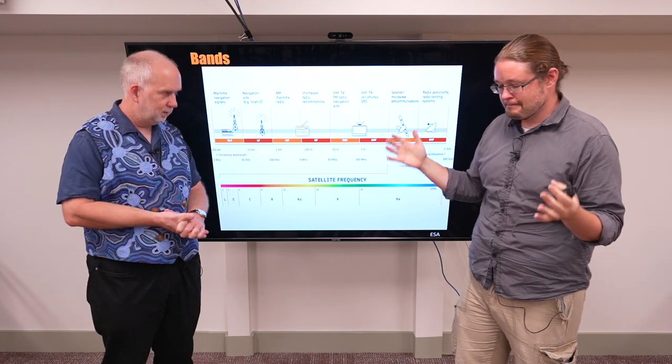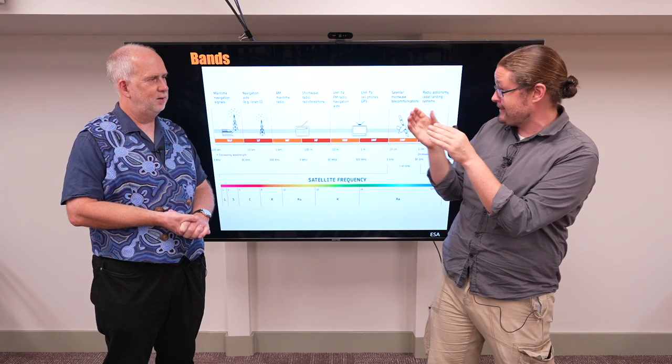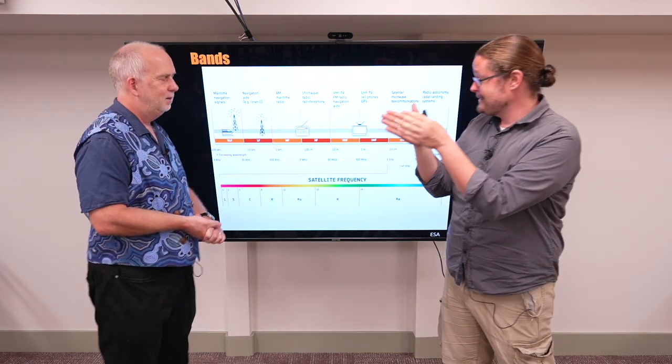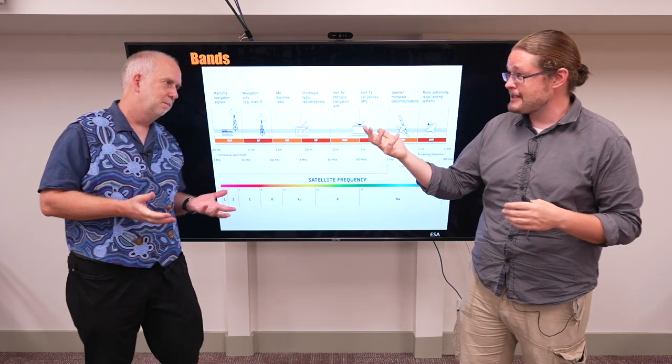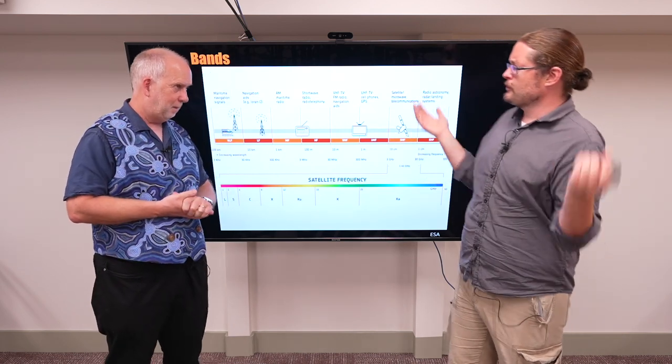So Paul, we can build some really big dishes, maybe we could even make some small ones that are perfectly directed at Earth, and we can transmit data, right? Okay, so now we have to decide what frequency we're going to use. Don't we just use radio?